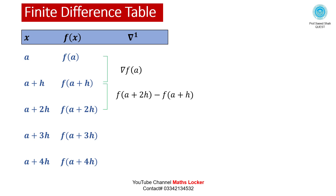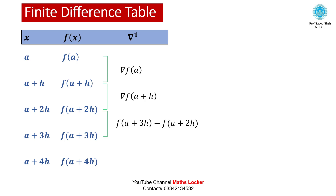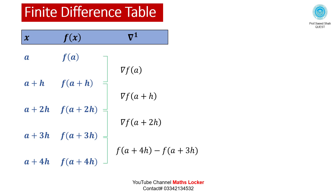Continuing the first differences: del f(a+h) equals f(a+2h) minus f(a+h); del f(a+2h) equals f(a+3h) minus f(a+2h); and del f(a+3h) equals f(a+4h) minus f(a+3h).